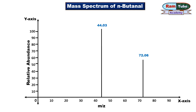Now let's see the mass spectrum of butanal. On the x-axis, the values represent the mass-to-charge ratio. In this case, the charge is +1, so these values directly represent the molecular weights of the compounds. The values on the y-axis represent the relative abundance of all ions. The ion with the highest concentration is taken as 100, and other ions get relative values.